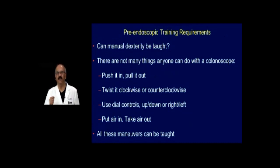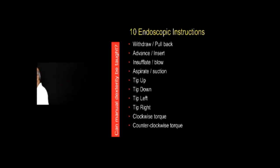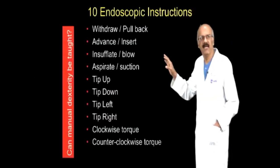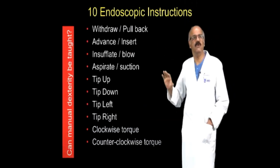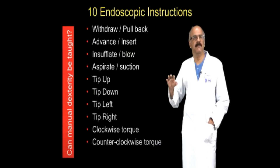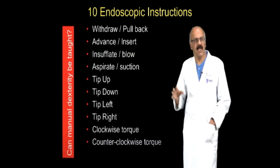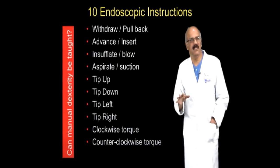Even research fellows interested in doing research should have basic endoscopy and colonoscopy skills. To a large extent, even an average person can be trained with some amount of manual dexterity — you don't require to be very good at procedures to start off. If you actually look at what an endoscopist does, there are just these 10 procedures: withdraw, pull back, advance, aspirate, tip up, tip down, and so on. You just use the endoscopy wheel. This is all you can do, so it can be easily taught.